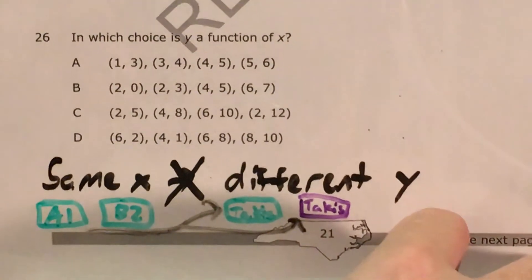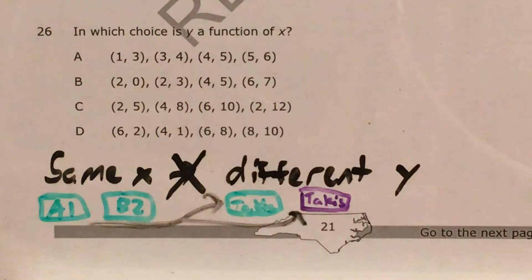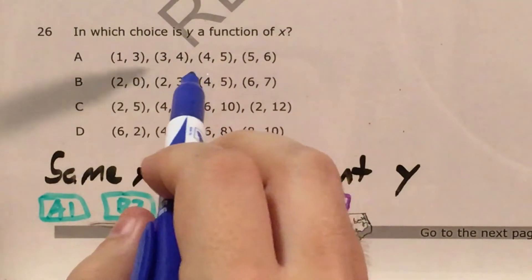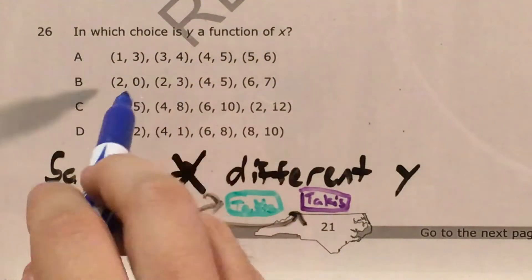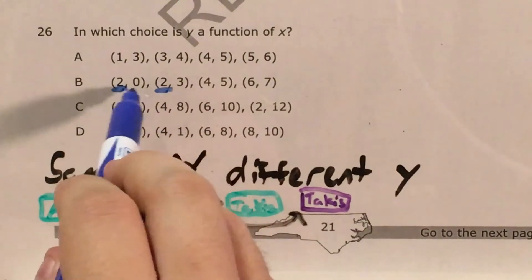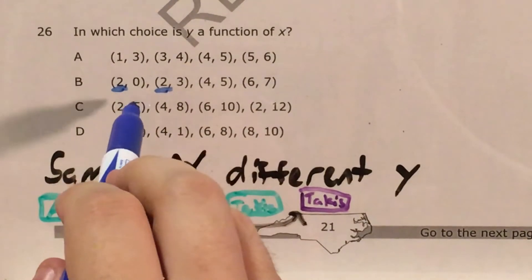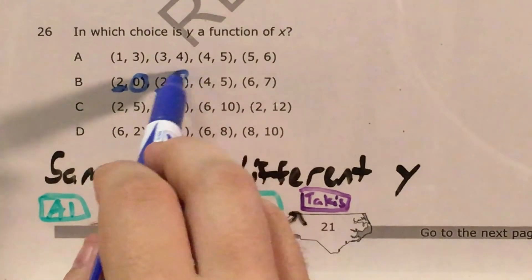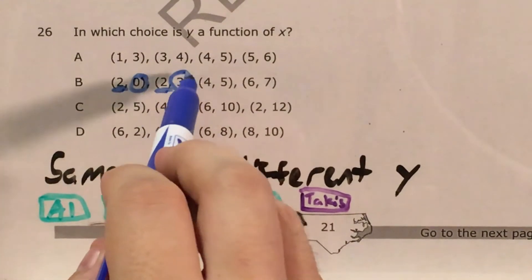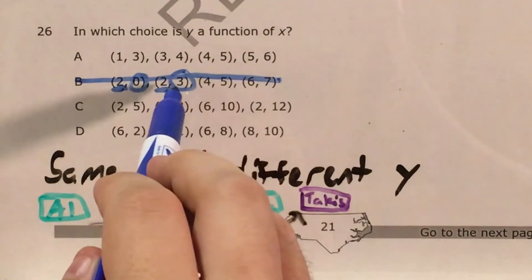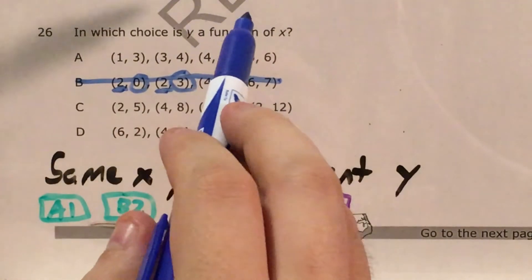Coming back to this question — in which choice is y a function of x — all I'm doing is looking for the same x and seeing if it gives me a different y value. For example, in choice B, two shows up as our x value multiple times: one time it gives us zero, another time it gives us three. This is exactly what we don't want, so we know that B is not our answer.